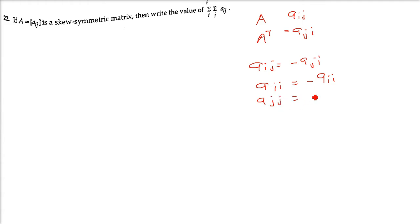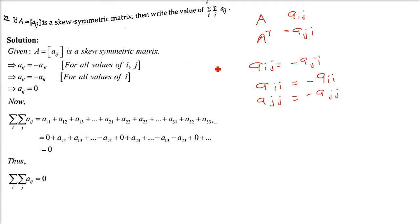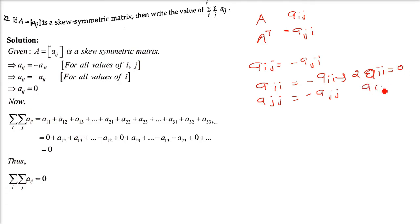When i equals j, Aii = -Aii, so 2·Aii = 0, meaning Aii = 0. This is consistent with what we showed in the previous question — all diagonal elements are zero.